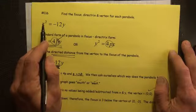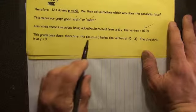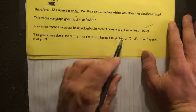The vertex is 0. You can clearly see that when X is 0, Y is 0. This graph goes down. Therefore, the focus is 3 below the vertex at 0, negative 3.